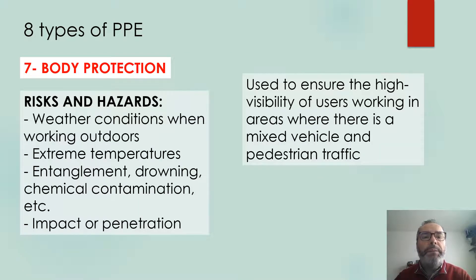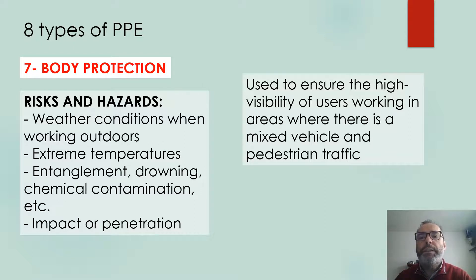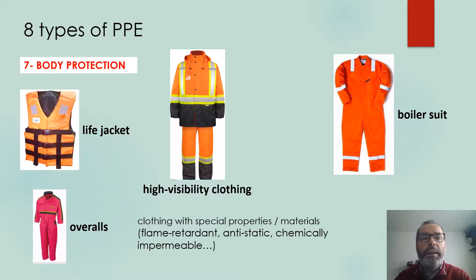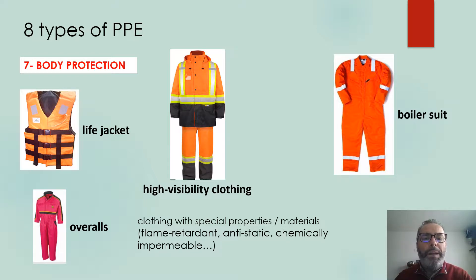The seventh type is body protection. The risks here include weather conditions when working outdoors, extreme temperatures, entanglement, drowning, chemical contamination, and also the impact or penetration of some objects on the body. This type of PPE is also used to ensure the high visibility of users under certain circumstances. Examples include jackets, overalls that can cover part of the body or the whole body, high-visibility clothing, or boiler suits. Clothing can include special properties such as flame-retardant, antistatic, or chemically impermeable materials.